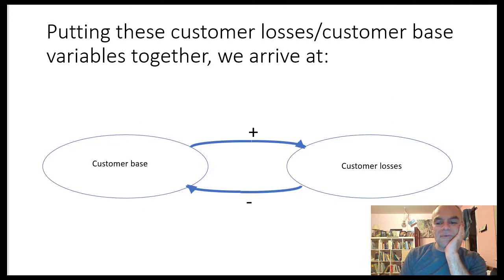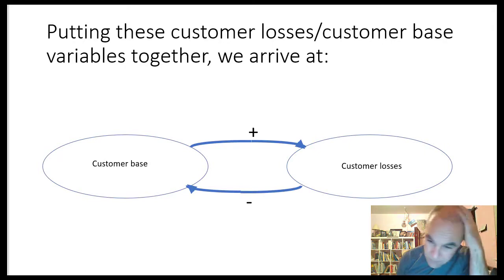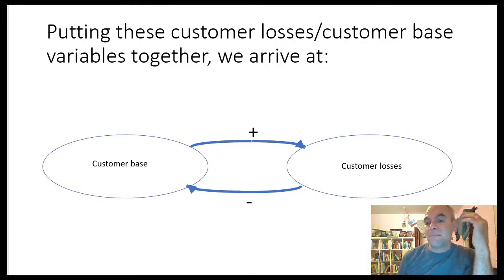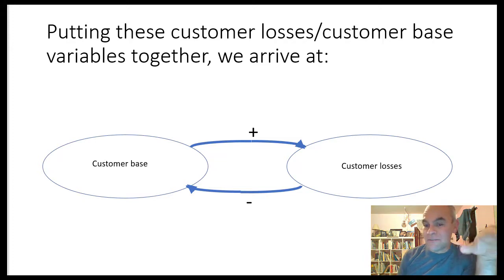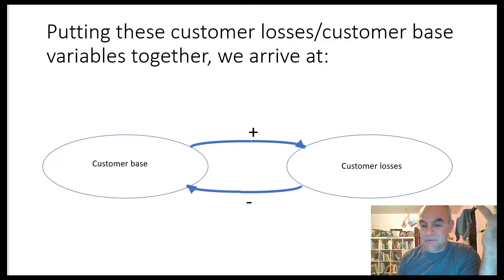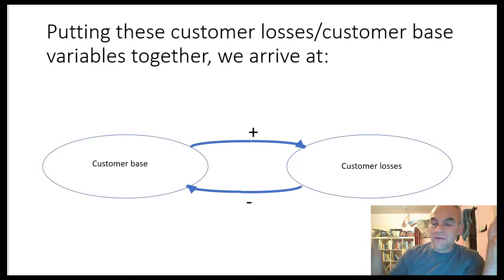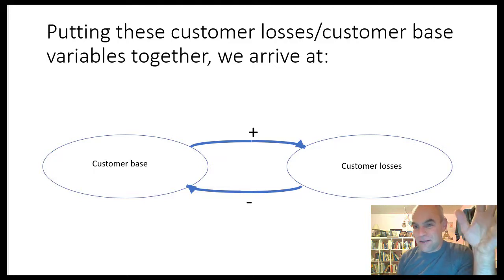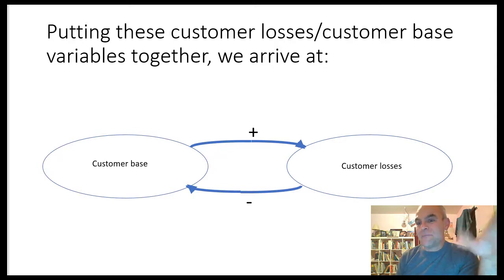If I were to put customer base and customer losses together, this is also a form of feedback. The difference between these two types of feedback is that this feedback tends to balance things out. When the customer base increases, the customer losses compensate and bring it back down — it's self-correcting, which is what this type of feedback results in: balancing feedback. The other feedback tends to make things go to the extreme, getting bigger and bigger. That would be an example of negative feedback or balancing feedback, whereas the other one is reinforcing feedback.